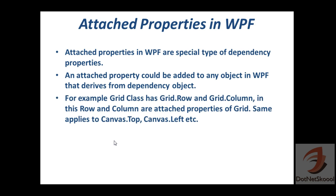Take for example the Grid class. We have come across the grid layout panel many times. It has two properties: Grid.Row and Grid.Column. These are the attached properties of the Grid class. The same applies for Canvas.Top and Canvas.Left. Let's jump into Visual Studio and see what I mean by these points.